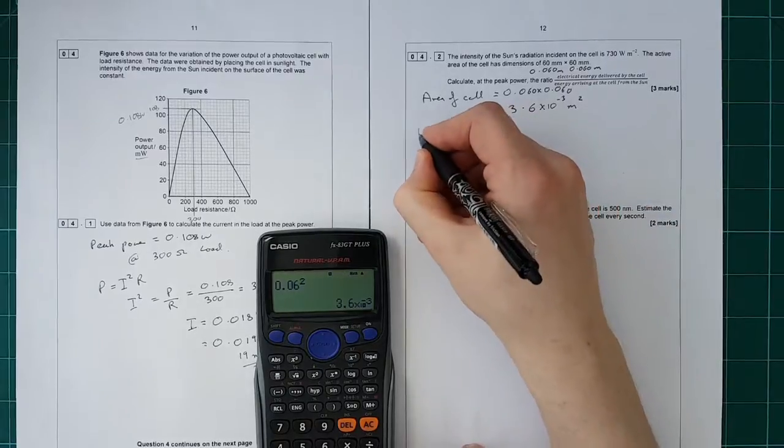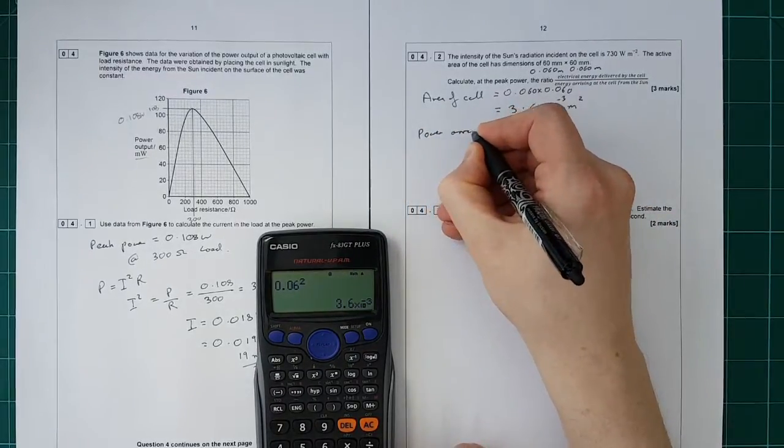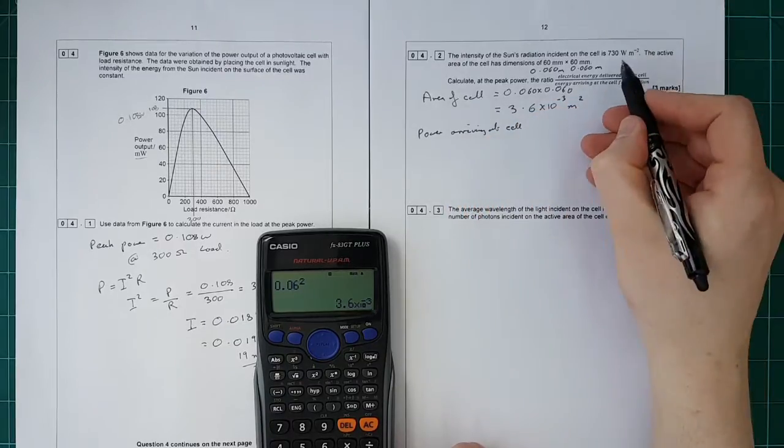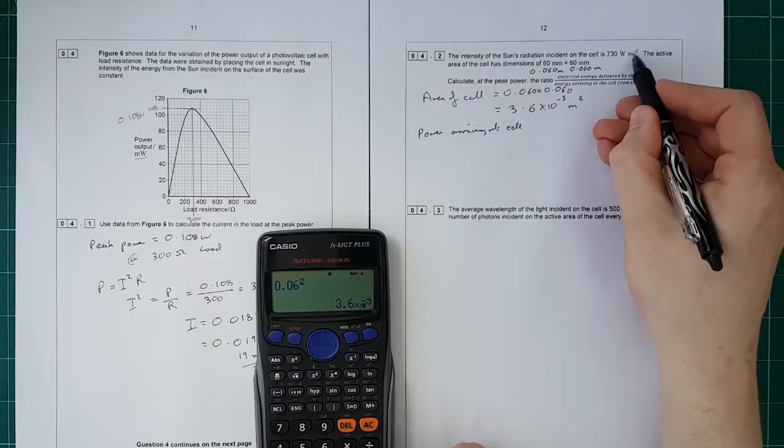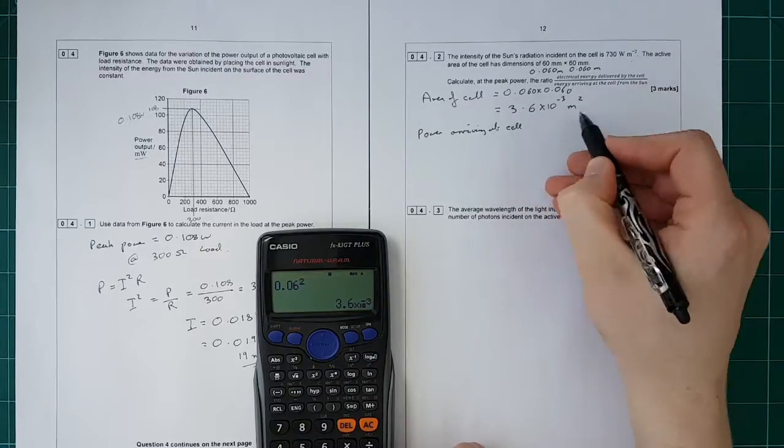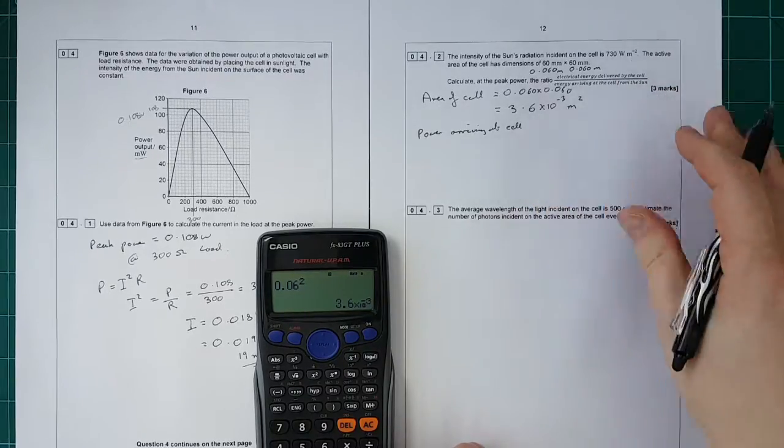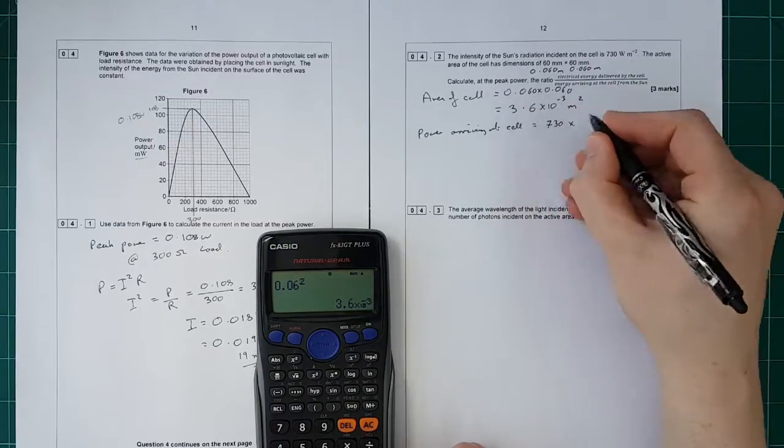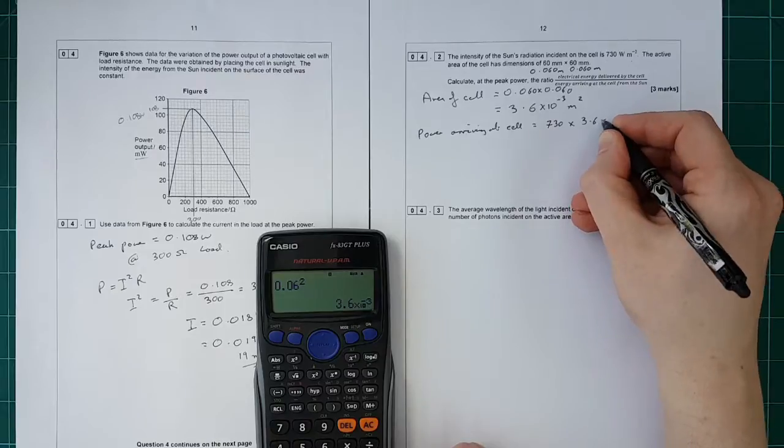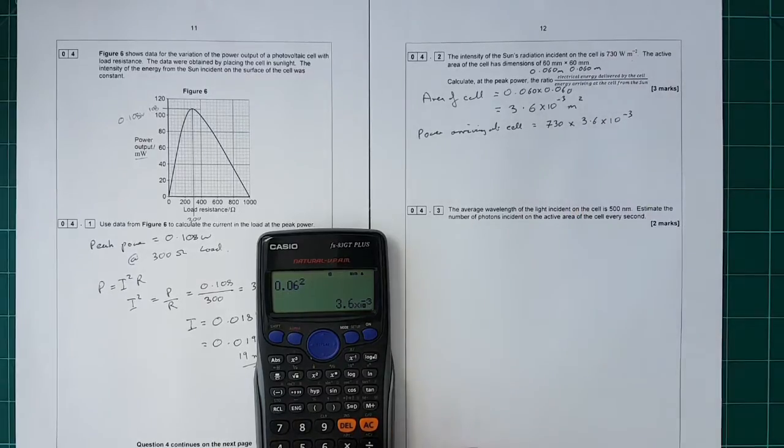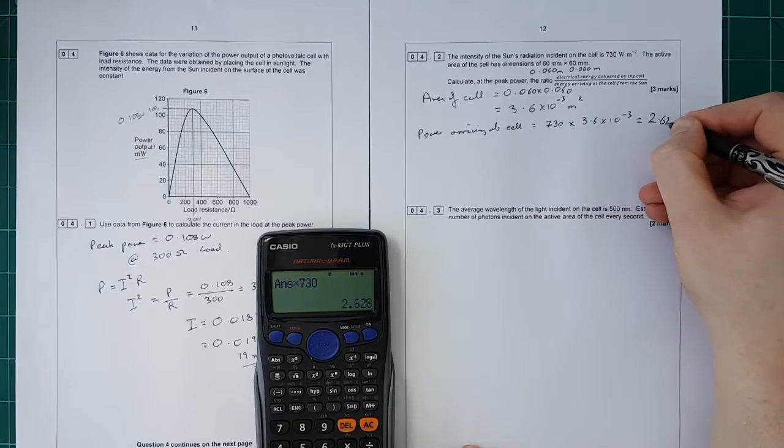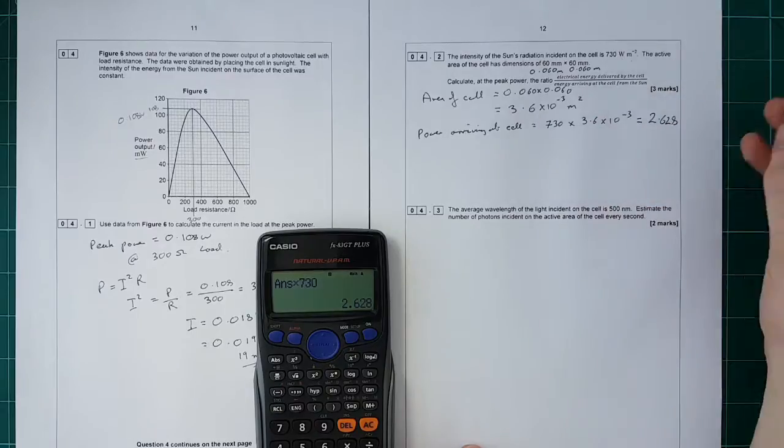So the power hitting the cell is the power delivered by the sun per metre squared times the number of metres squared of the cell. So it's 730 times 3.6 × 10⁻³, and we get 2.628 watts.